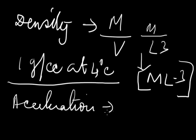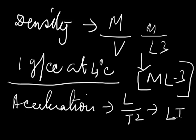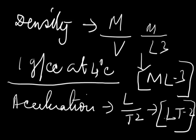Now, acceleration. Acceleration equals velocity divided by time, and velocity is LT⁻¹, so acceleration is LT⁻¹ divided by T, which equals LT⁻². Its SI unit is meter per second squared, or m·s⁻², and in CGS it is centimeter per second squared.